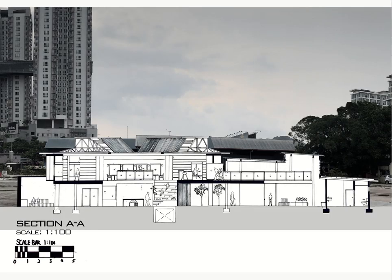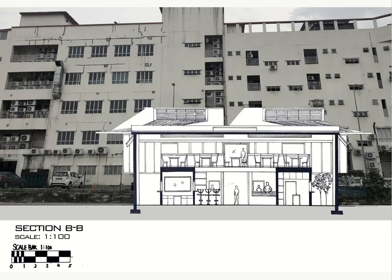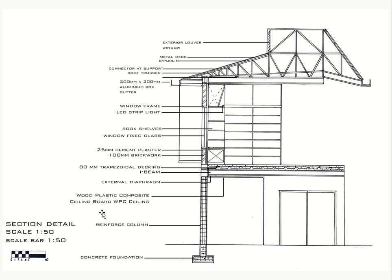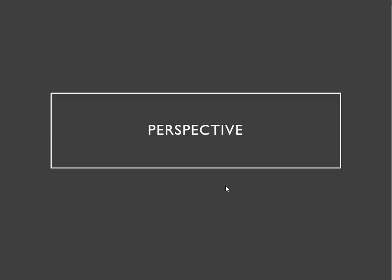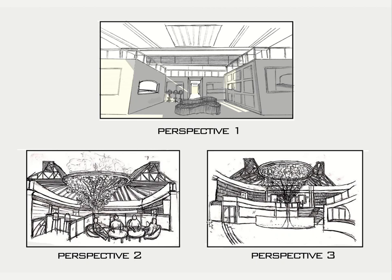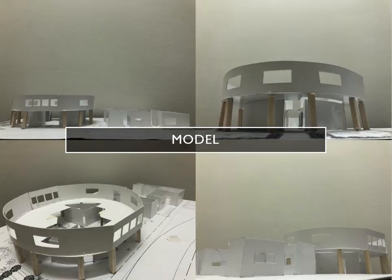This is my Section A. This is my Section B. You can see the side section — it shows how the building connects with the existing market. This is my Section DQ. Now, perspectives. This is my exterior perspective. This is my interior — the market perspective. This one is the upper floor of the converted space. And this one is the ground floor of the converted space. And last, this is my model. Thank you.